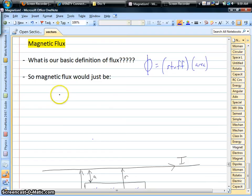So for magnetic flux, our stuff is a magnetic field. So it would be the amount or strength of a magnetic field times an area that it's going through.